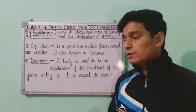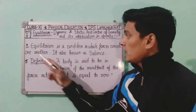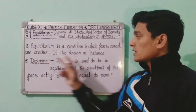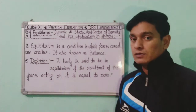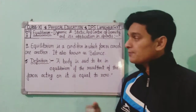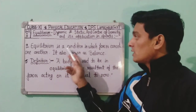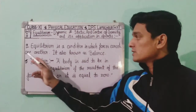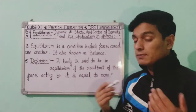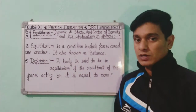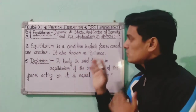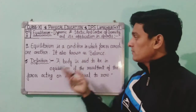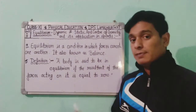The meaning of Equilibrium: Equilibrium is a condition in which forces cancel one another. It is also known as Balance. Balance is also known as Equilibrium — we can say Equilibrium is also known as Balance.